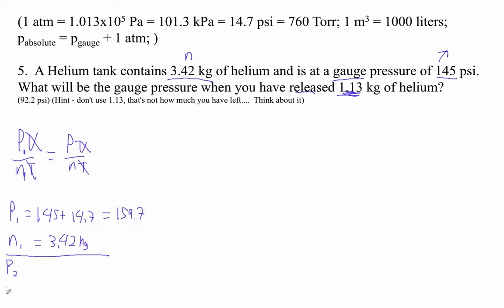And then N2 is actually how much you have left, so 3.42 take away 1.13. So I'm trying to sucker you into using the 1.13, but you don't want to do that. 3.42 minus 1.13, 2.29.